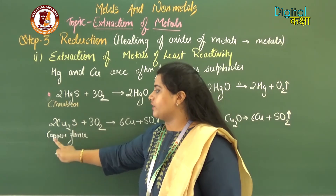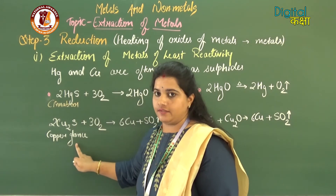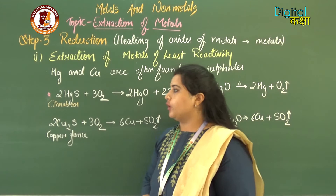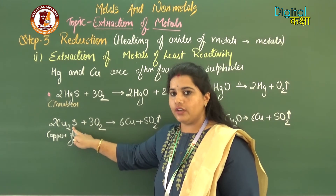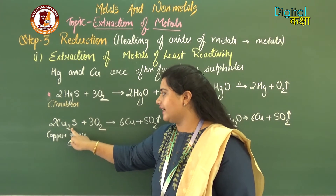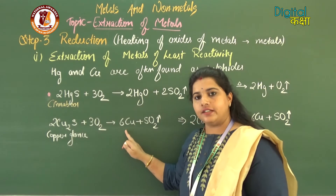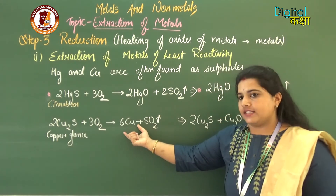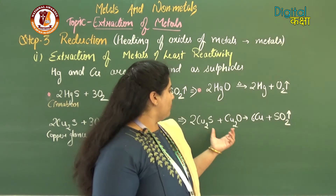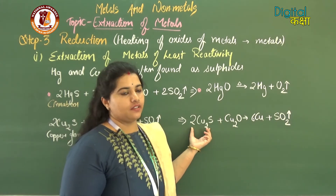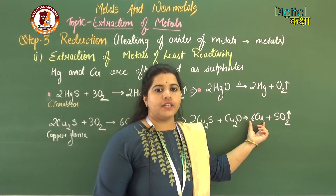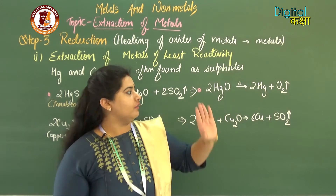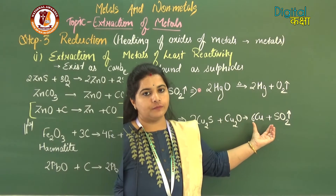In the case of copper: copper exists as copper sulfide (Cu2S) in the earth's crust, commonly called copper glance. Since it is a sulfide, roasting is applied — heating copper sulfide in the presence of air gives copper metal and sulfur dioxide. Additionally, treating copper oxide with copper sulfide also yields pure copper metal.